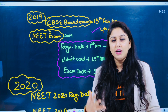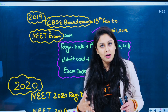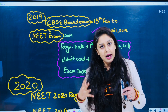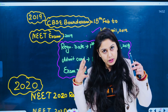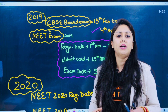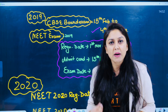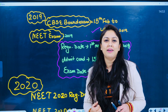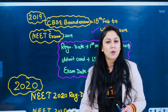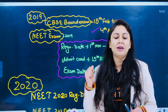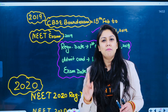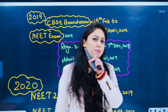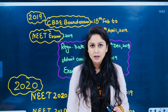Ab aap is saal dekhe chalou ki agar abhi situation sambhal rahi hai, aur aapki NTA hai, aapka jo CBSE board hai, aapko itna time deta hai — dhai mahine ka time preparation ke liye — expect karke chalou ki is baar aapko do mahine ka time toh zaroor denge. Ab is saal ke smart bachche calculate kar chuke honge ki 26 April hai, May, June — that means July ke first week mein aapka exam hone ke chances hain.